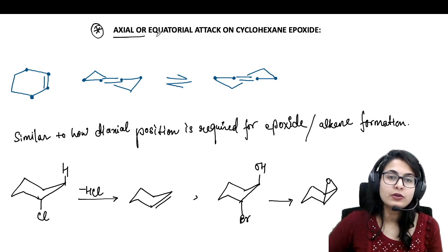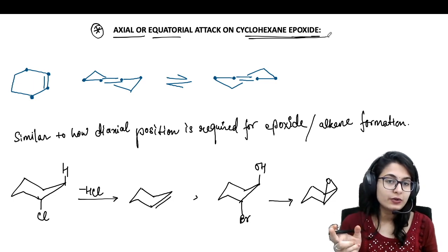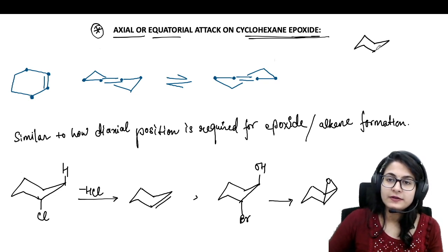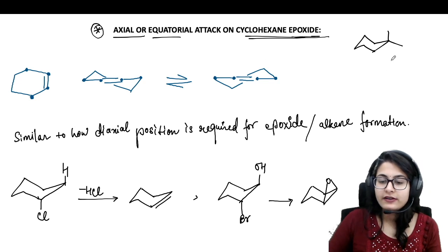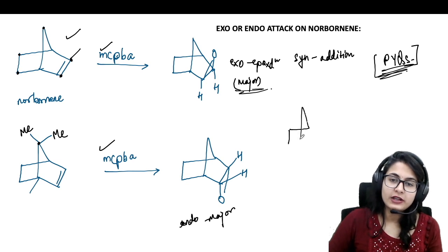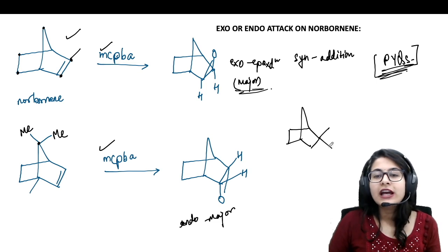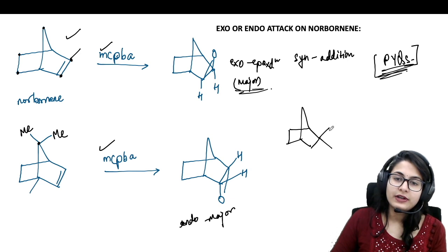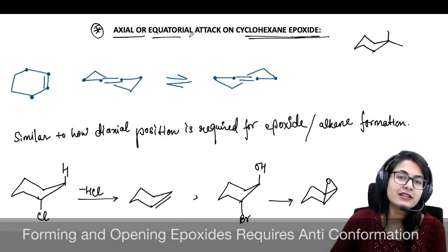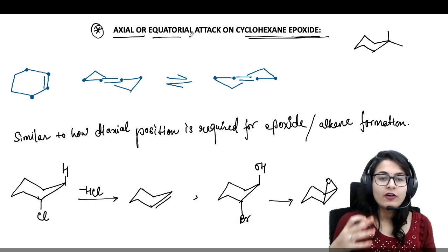Now — axial or equatorial attack on the cyclohexane epoxide. Why axial and equatorial, not endo or exo? In cyclohexane you have the proper names: axial and equatorial. However, in a saturated norbornane system these positions are not axial and equatorial, so you would just call them exo and endo. Moving on to how different attacks take place on cyclohexane epoxide.